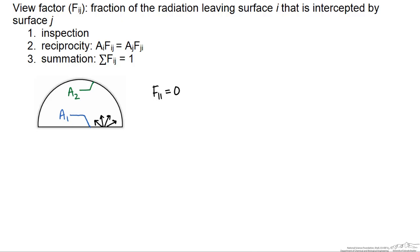So by the summation rule, if F one one equals zero, then F one two has to equal one.